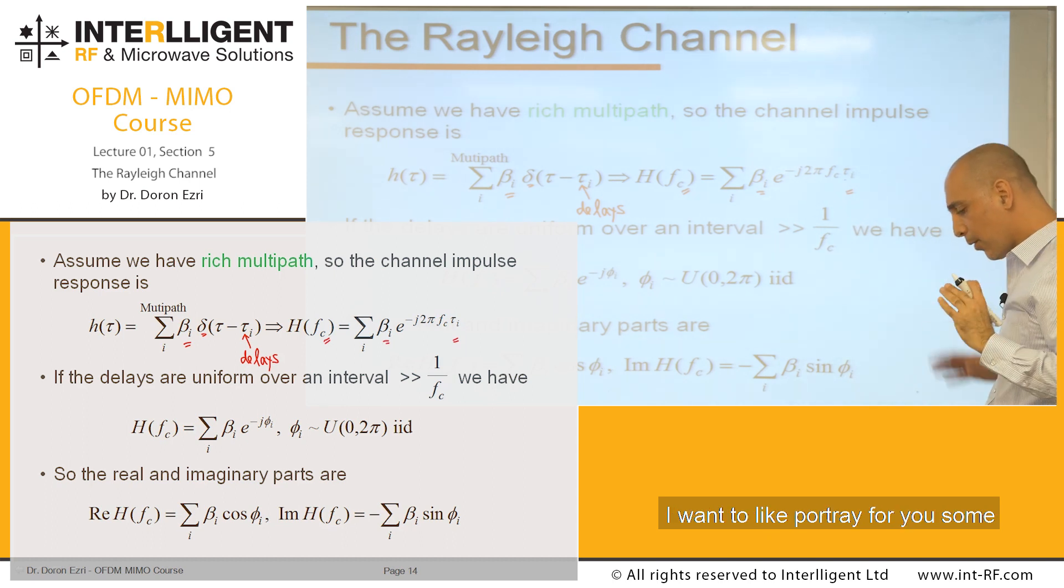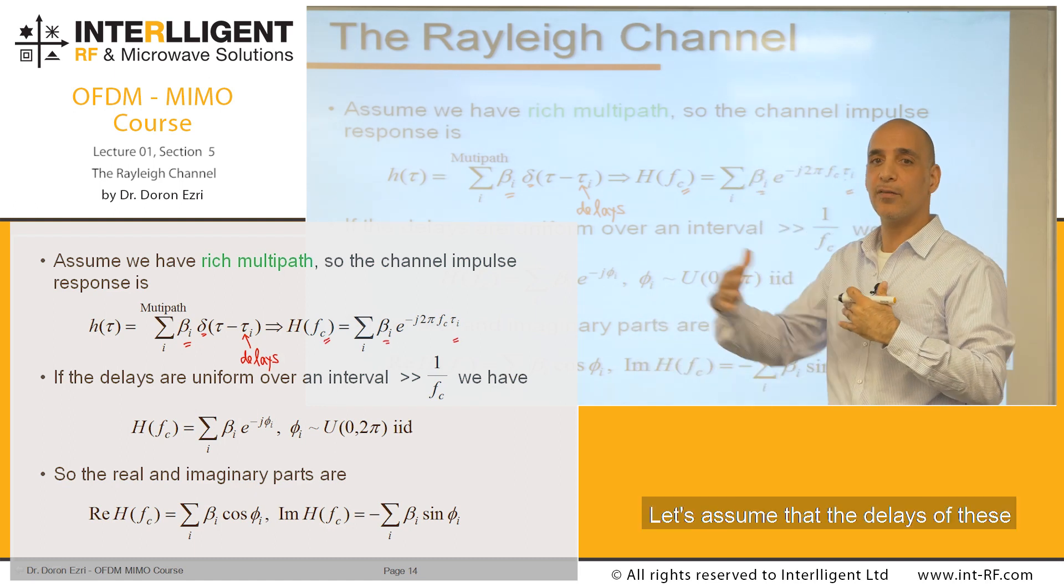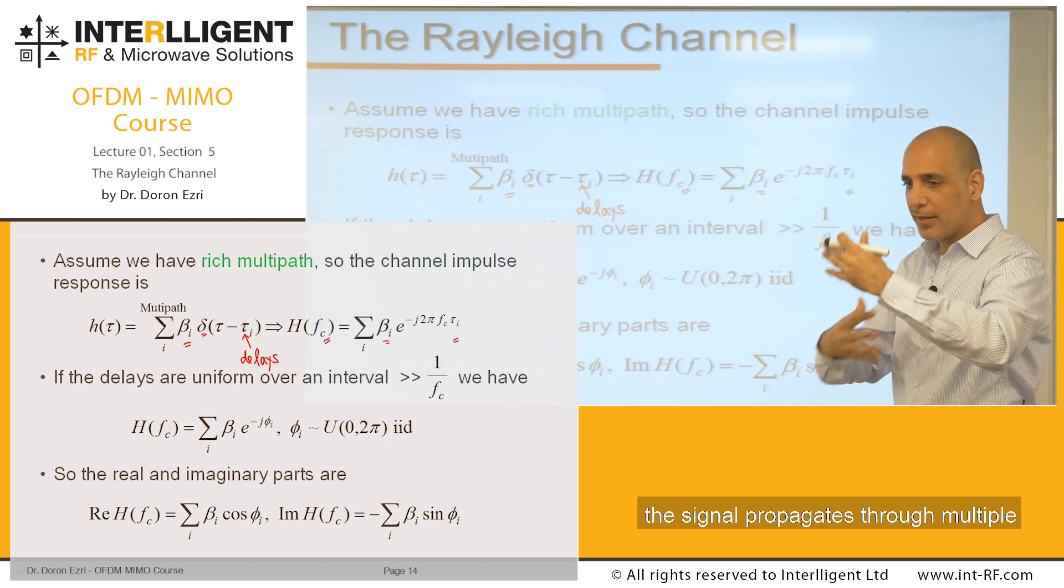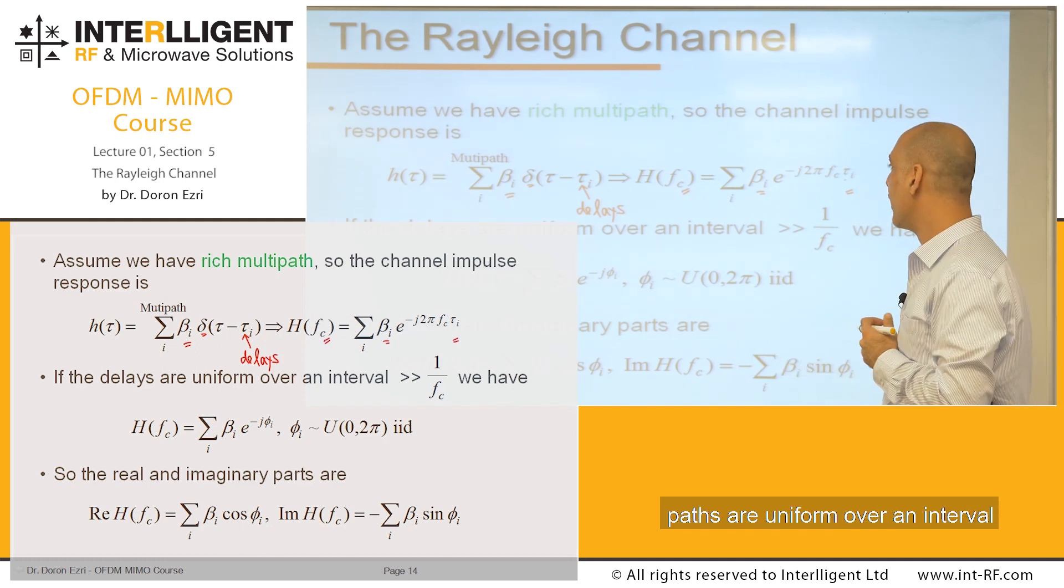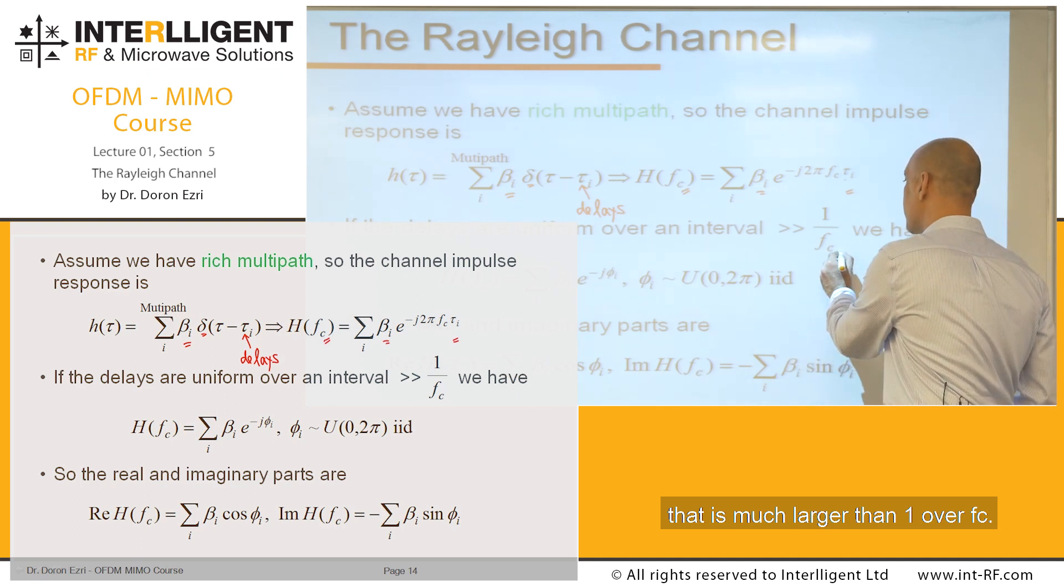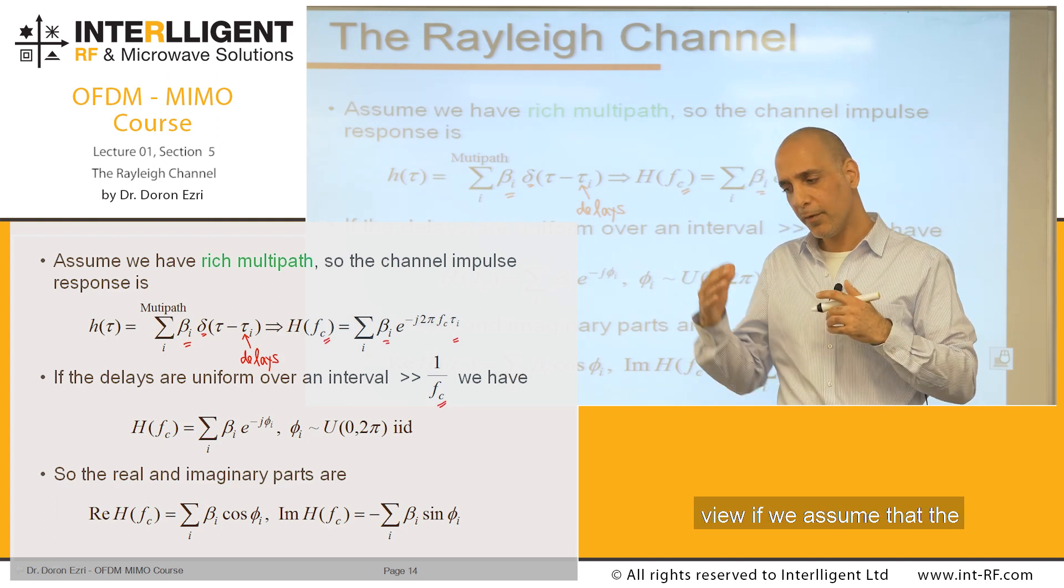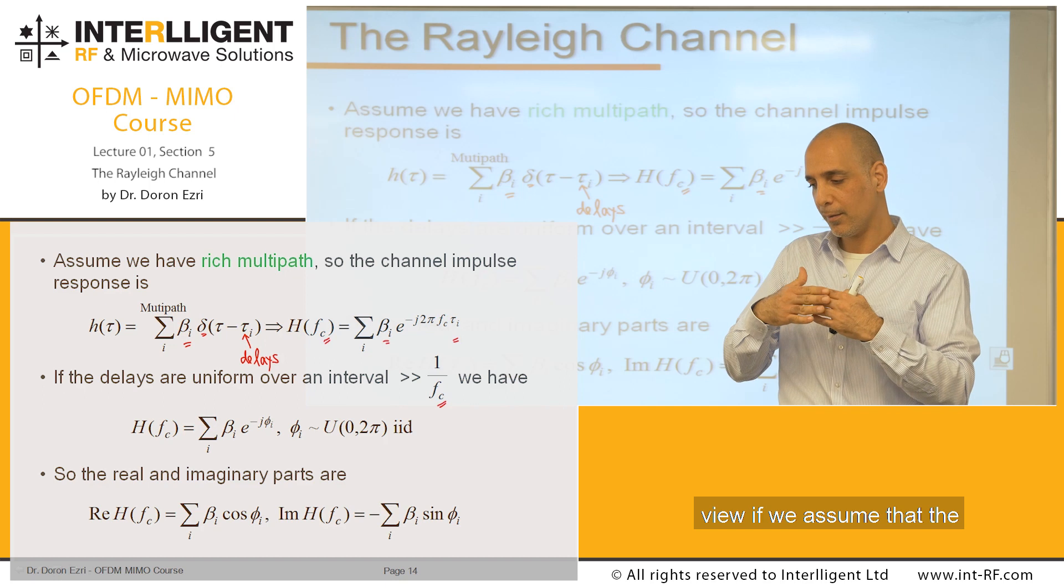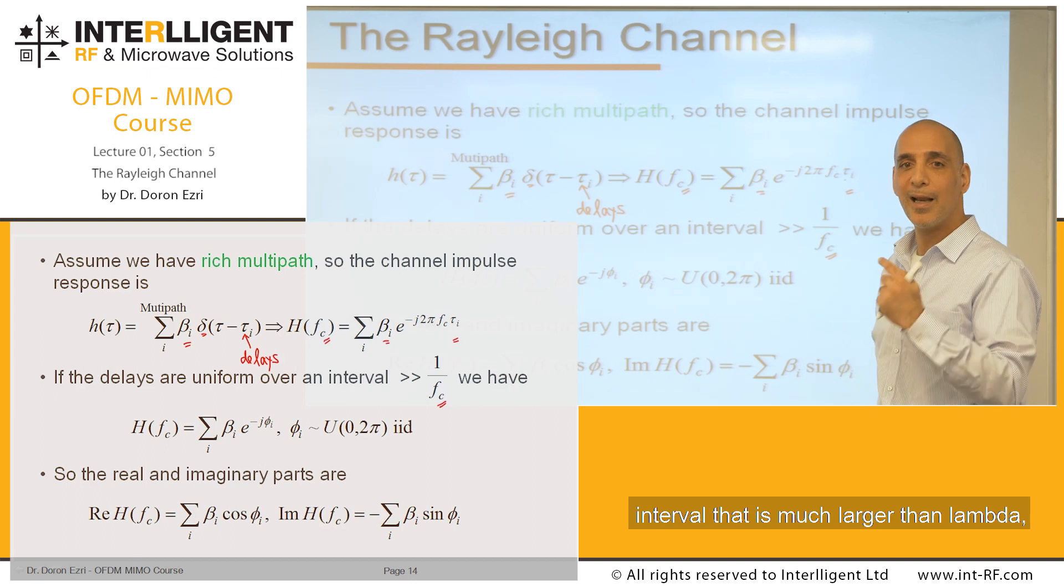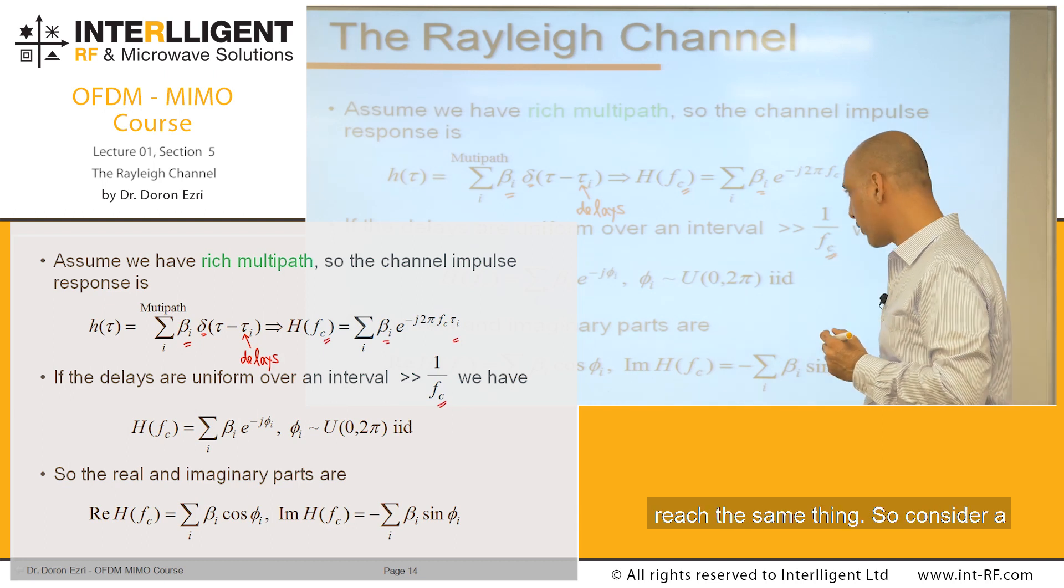So now I want to portray for you some physical scenario. Let's assume that the delays of this multipath, the fact that the signal propagates through multiple paths, are uniform over an interval that is much larger than 1/fc. From a slightly different point of view, if we assume that the length of the path is uniform in an interval that is much larger than lambda, the wavelength associated with the carrier frequency, we reach the same thing.